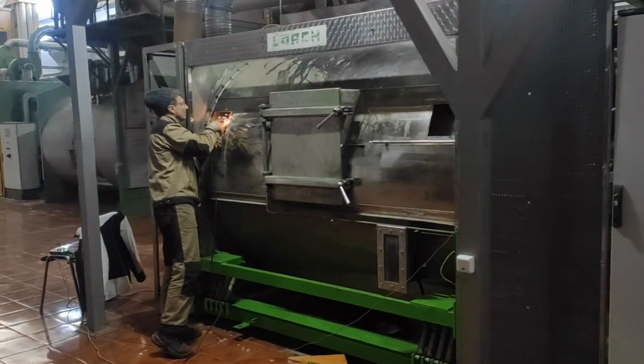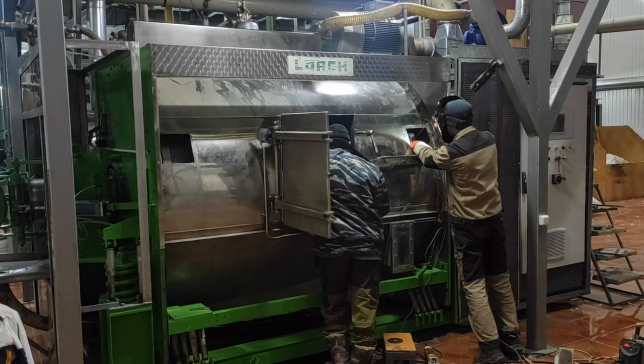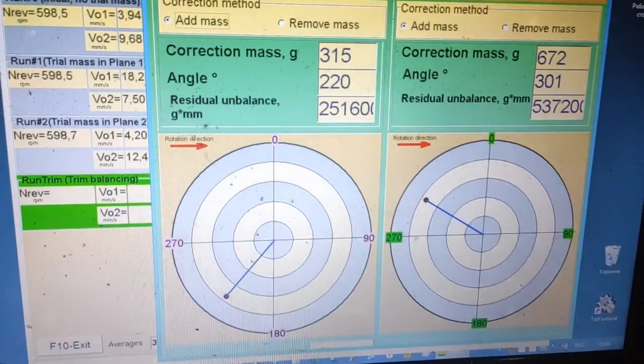Remove the test weight and place the test weight on the second plane, on the side where the second sensor is mounted. Measure the vibration.